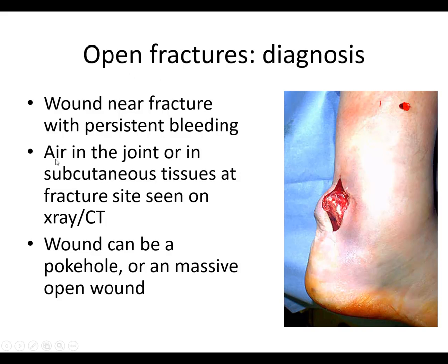The other thing you look for is air in the joint or in subcutaneous tissues on an x-ray or CT scan. So if you're not sure — it's thick soft tissue envelope, there's a small hole — and you see air in the joint and it's a distal femur fracture going into the joint, you have to think: how did that air get down in there? There must have been some communication. That hole must have communicated down. So the wound could be a poke hole or an open massive wound like in the last slide.